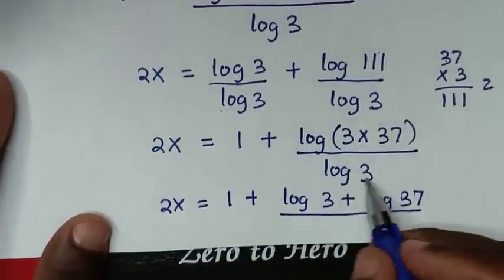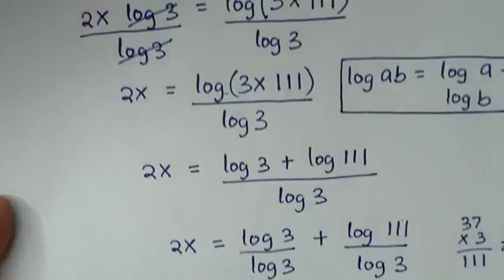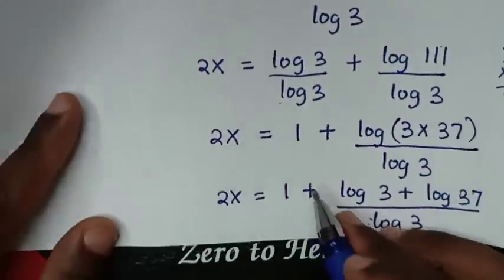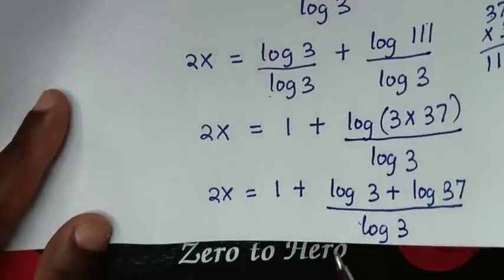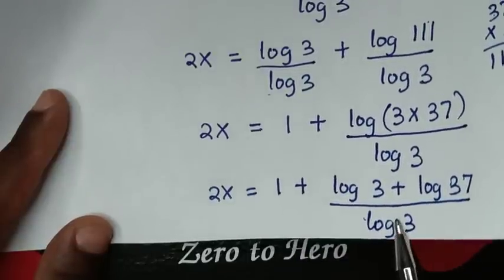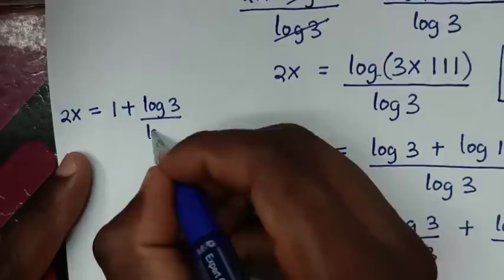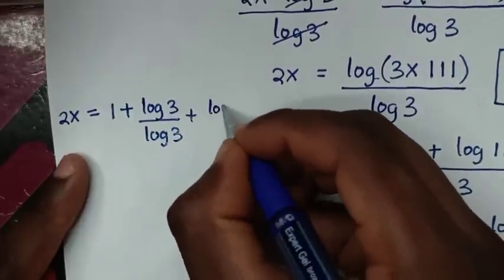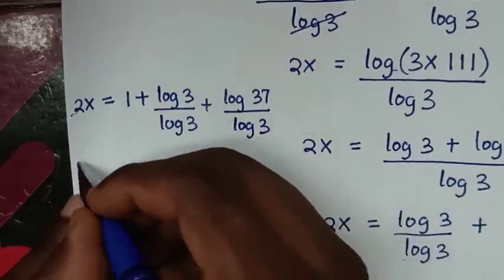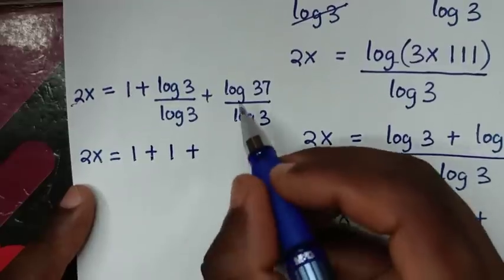Then in the next step, 2x is equal to 1, plus we divide by log of 3 in each part, so it will be 1 plus log of 3 over log of 3, plus log of 37 over log of 3. Then log of 3 over log of 3 is 1, then plus log of 37 over log of 3.